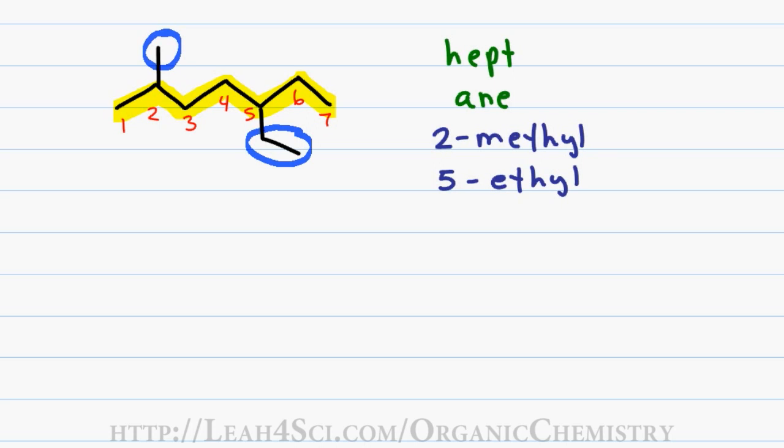With more than one substituent, you order them in alphabetical order so we'll compare M to E. Since E comes before M, I get a final name of 5-ethyl-2-methylheptane.